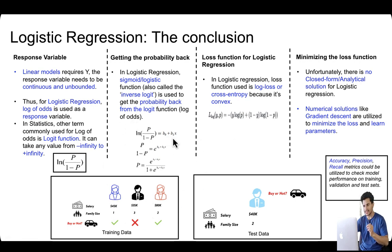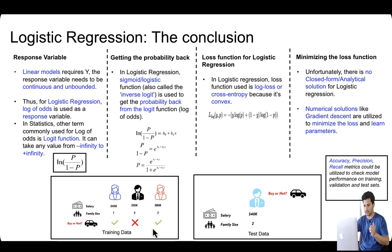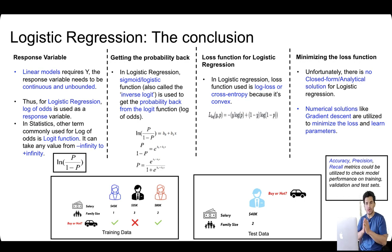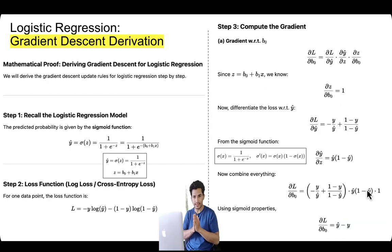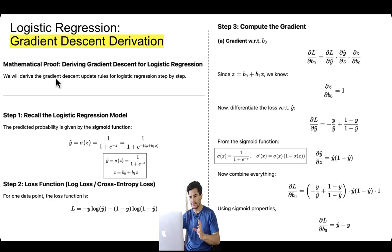Summing it all up: in training we train the model to learn the right parameters (coefficients), and in prediction we use those coefficients to make predictions. For example, given training data with individuals' salary, family size, and whether they bought a car, once the model is trained we can predict for a new individual with a 40k salary and family size of two whether they will buy the car. The metrics used to evaluate performance include accuracy, precision, recall, and so on. Now let's get to the main part: the derivation.